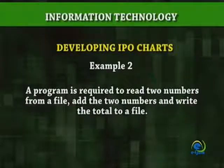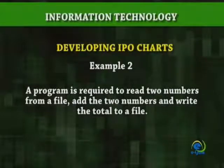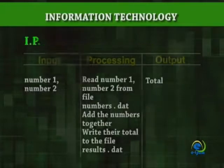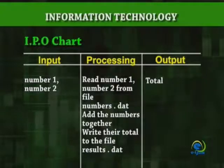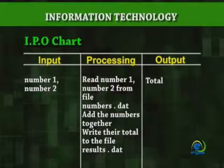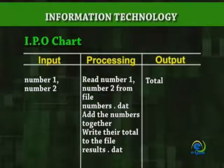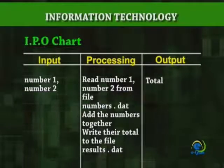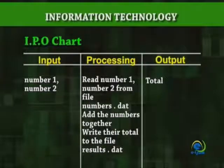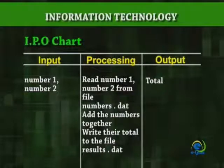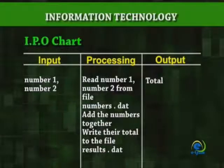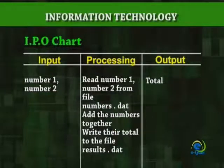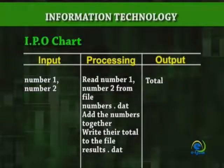Example 2: A program is required to read two numbers from a file, add the two numbers, and write the total to a file. In this example, we are reading from and writing to a file. The IPO chart would look like this. In the input column, we put the names of the inputs: Number 1 and Number 2. In the processing column, we indicate the processing: read Number 1 and Number 2 from the file numbers.dat, add the numbers together, then write their total to the file results.dat. In the output column, we put the name of the output, which in this case is Total.